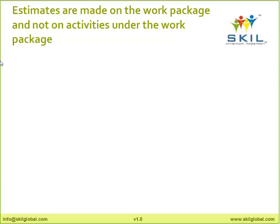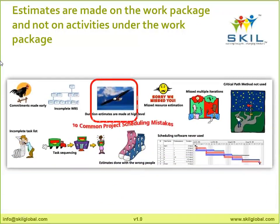The third problem: estimates are made on work packages at a high level, not on individual activities. The boss asks when you can complete, and you say 'about two months' based on a high-level estimate. If you use scheduling software but make these mistakes, no software on earth will help you do any intelligent analysis. Giving a good estimate is your job, not the software's job. But if you give a good estimate, the software will tell you: if you continue like this, you will delay the project by three days. The software itself has no brains.